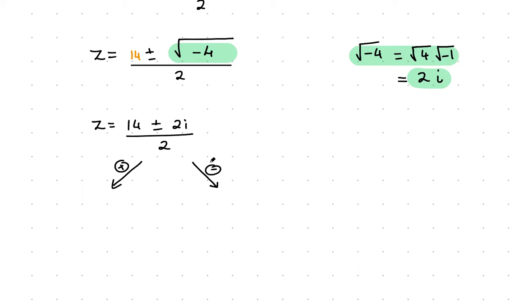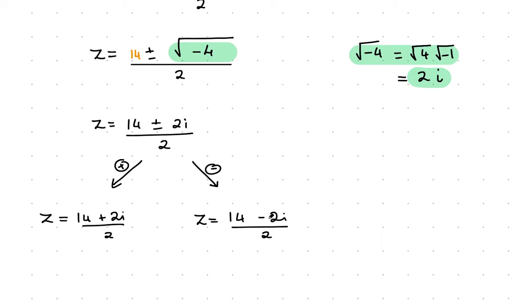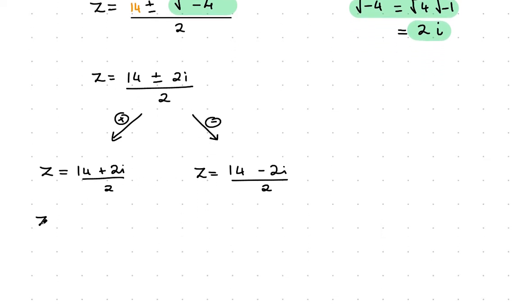Z equals 14 plus 2i over 2, and the other option is z equals 14 minus 2i over 2. We split that into the real part, 14 over 2, and the imaginary part for both of them.